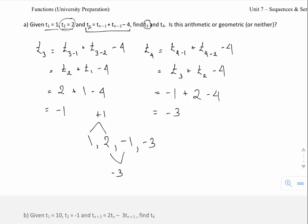To check if it's geometric, I would divide. So I'll go 2 divided by 1, so the second divided by the first term, that gives me 2. Now if I do negative 1 divided by 2, I get negative 0.5, or just negative 1 half. And those don't match up. So in this case, it is neither geometric or arithmetic.